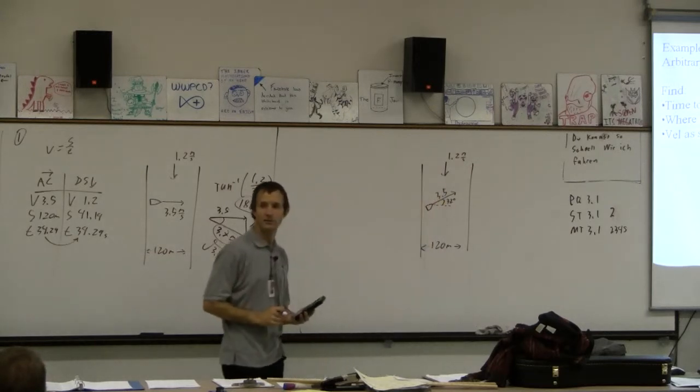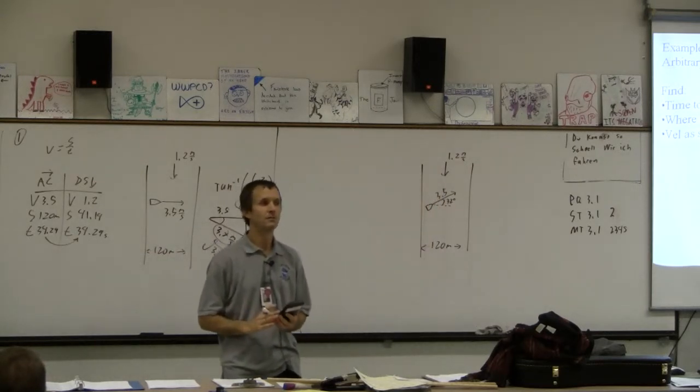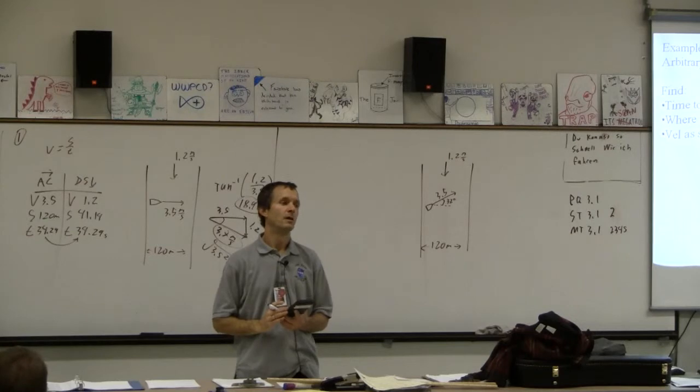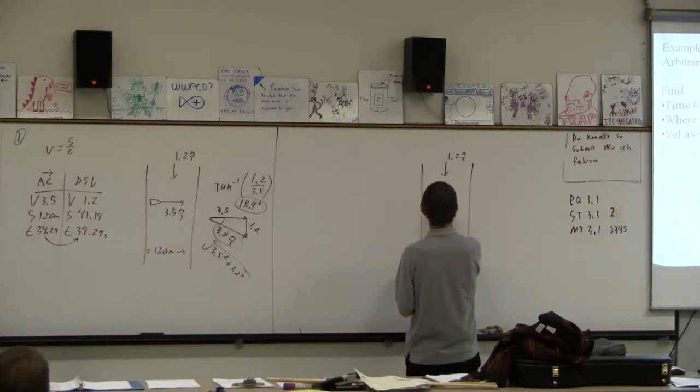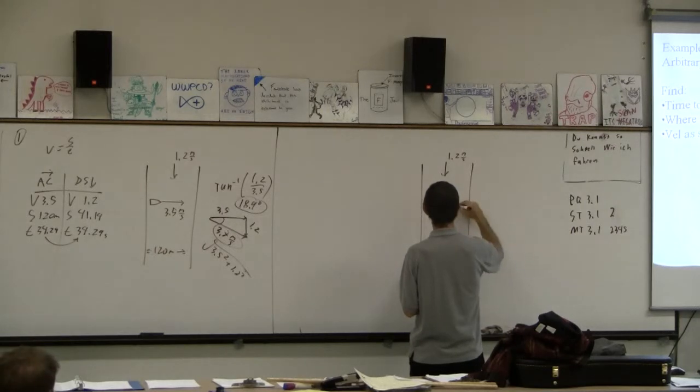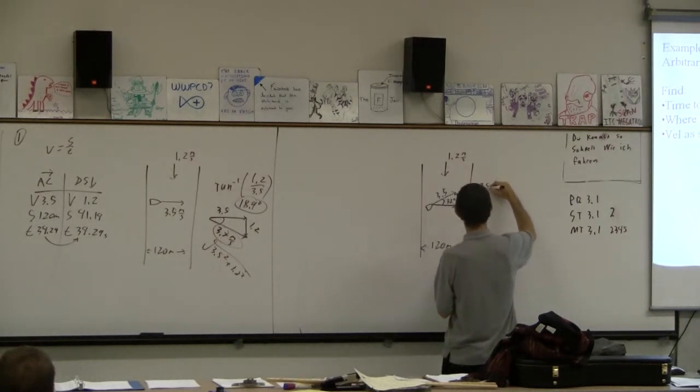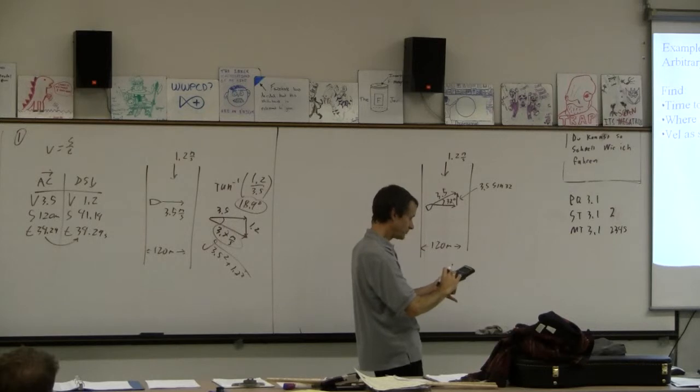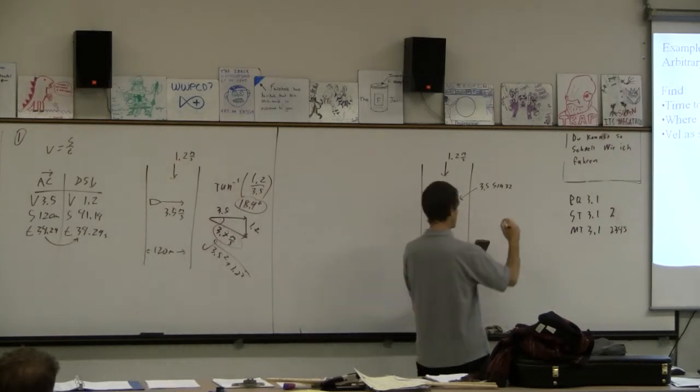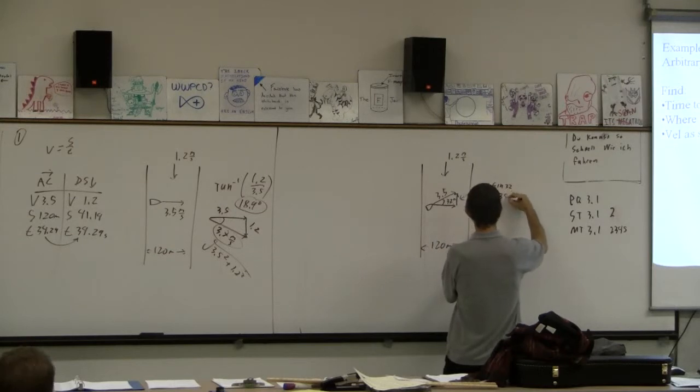And what do we do? We've got an angle magnitude vector. What do we always have to do with those? Always have to make them into components. I don't know what to do with the components, but I know that I have to make them into components or my teacher will make fun of me. Okay, so 3.5 sine 32 is the upstream component.